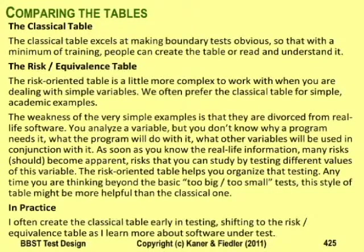Let me close this part of the lecture with a summary comparison of the two types of tables. I find the traditional table easier to use — I'll often start my analysis with it because it focuses me on the primary dimension and gets me thinking about what the program will do with expected data. That's useful thinking, and the table provides a simple, concise summary. Once I understand how the program should use the variable, I start thinking about how it can go wrong, and the risk-oriented table helps me work through that. It takes more time and thinking, but when I really want to think through the implications of a variable, it's a handy tool.